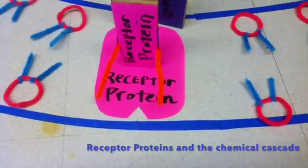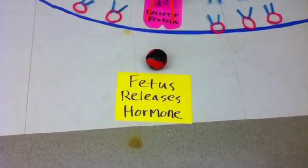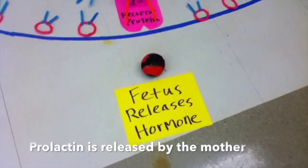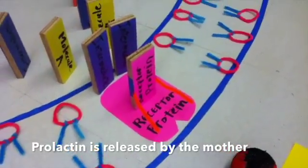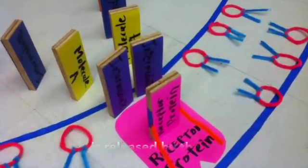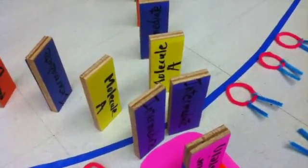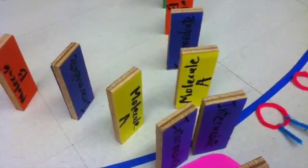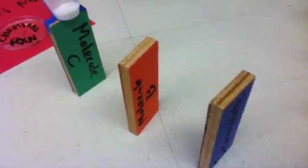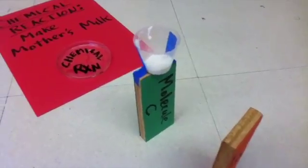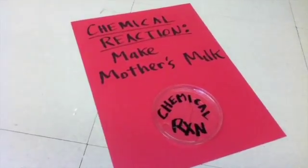This model explains the role of the receptor protein in the cell membrane, releasing a hormone into the mother's bloodstream. The hormone acts as a substrate and locks onto the active site of the receptor protein, which causes a molecular shape change. This begins a cascade of chemical reactions from intermediate to molecule A to molecule B, eventually to molecule C, resulting in a chemical reaction in the cytoplasm of the cell, in this case to make mother's milk.